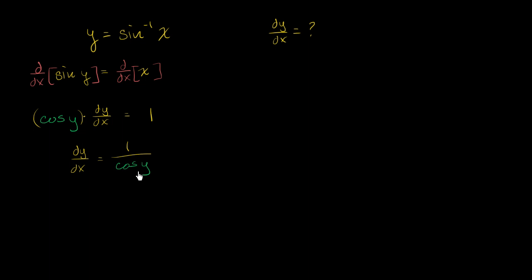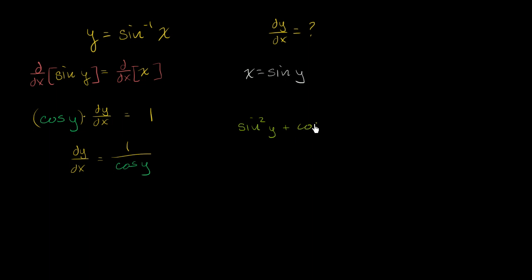We already know that x is equal to sine of y. So if we could rewrite the denominator — instead of cosine of y — using our trigonometric identities to rewrite it in terms of sine of y, then we'll be in good shape because x is equal to sine of y. We know from our trigonometric identities that sine squared of y plus cosine squared of y equals one. If we subtract sine squared of y from both sides, we get cosine squared of y equals one minus sine squared of y.